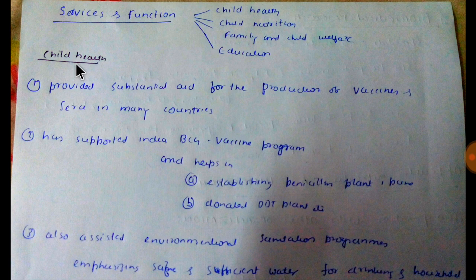Talking about child health — three types of activities promote the child welfare program. One is the vaccination program. The other relates to the environment — the environment of water, soil, and food.